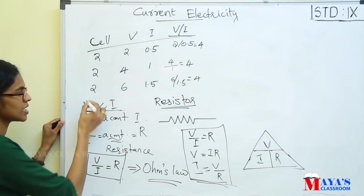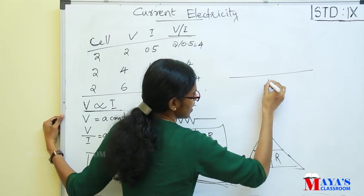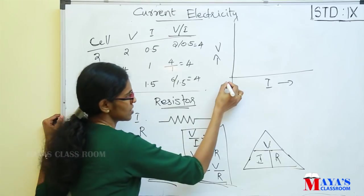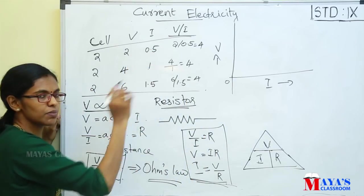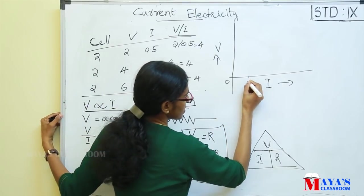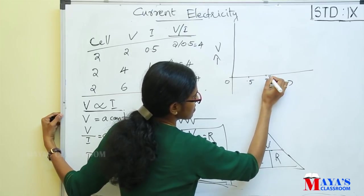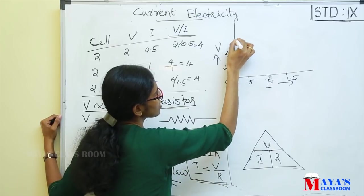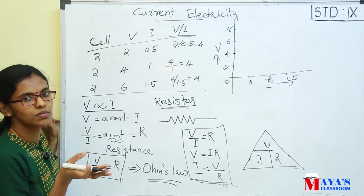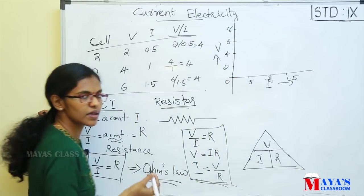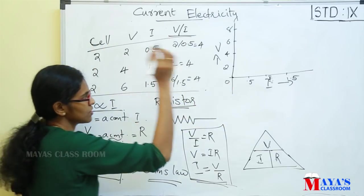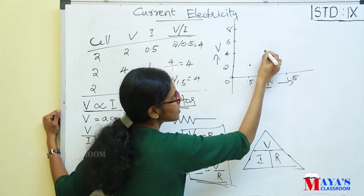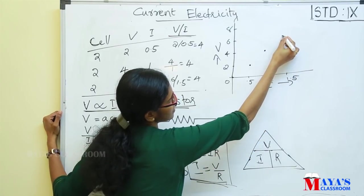Now we have a graph. On the X axis we have current I, and on the Y axis we have voltage V. When the circuit is off, current and voltage are both 0, so the origin is point (0,0). When the circuit is on: at 0.5 A the voltage is 2 V; at 1 A the voltage is 4 V; at 1.5 A the voltage is 6 V. These three points are plotted.